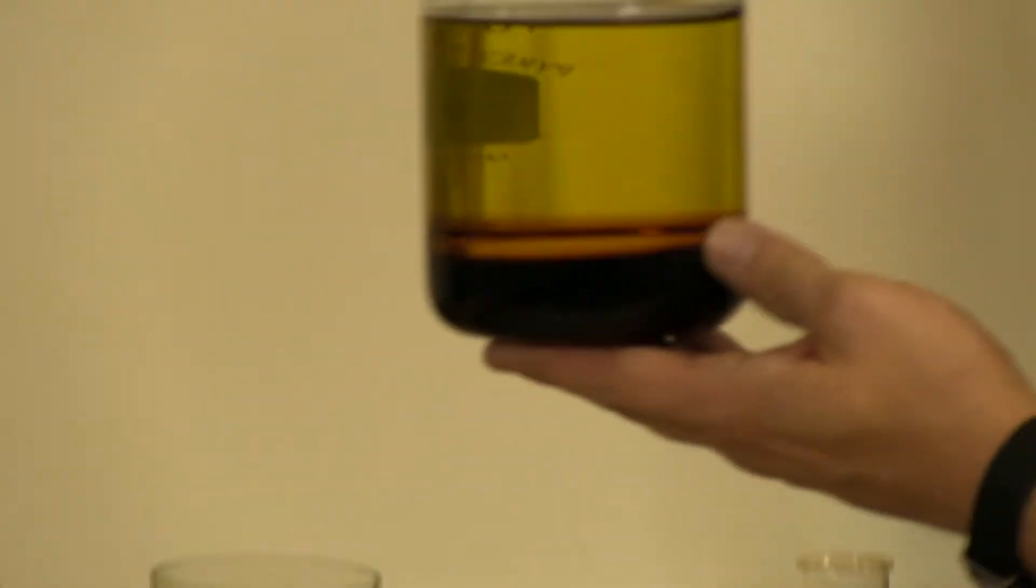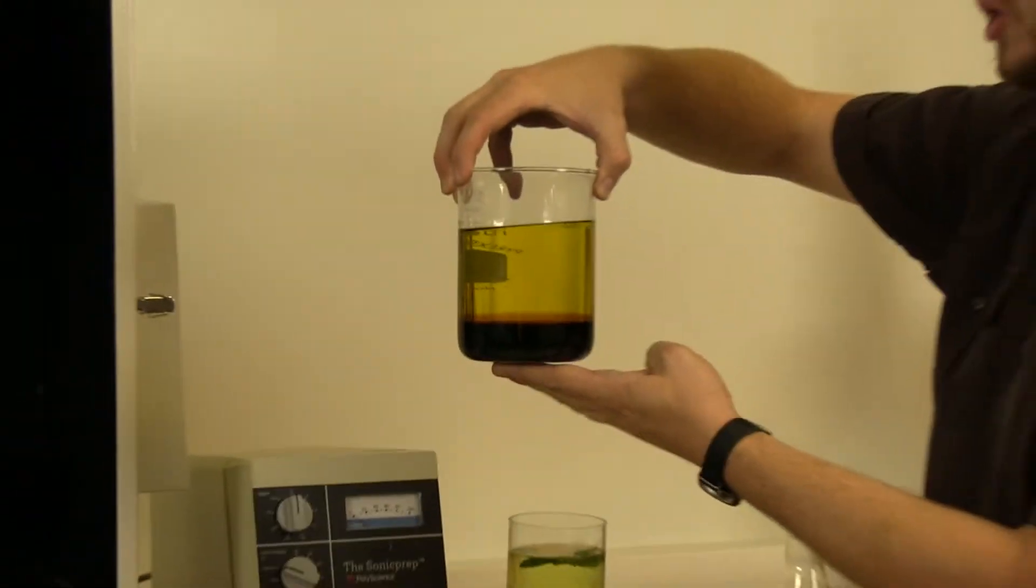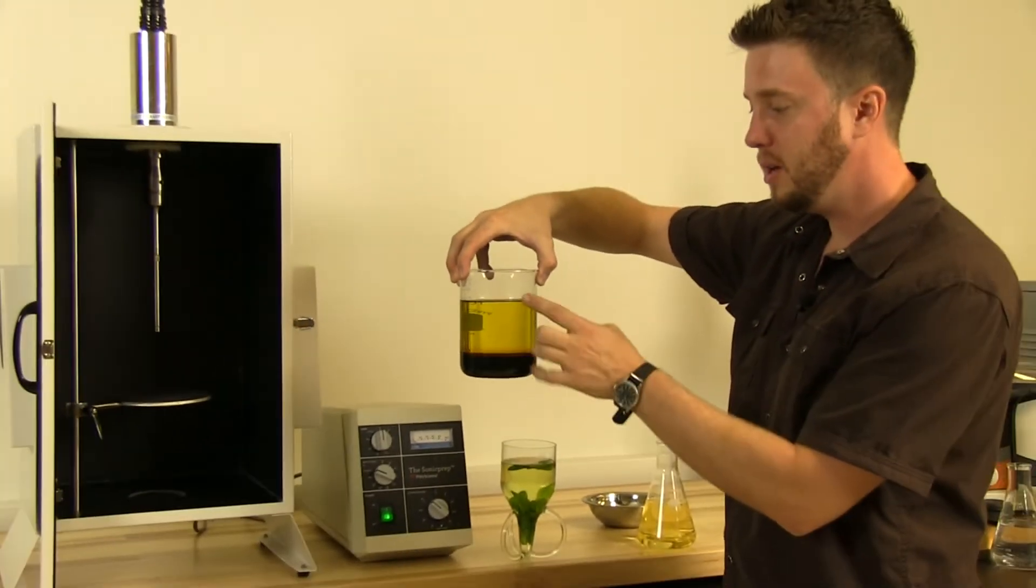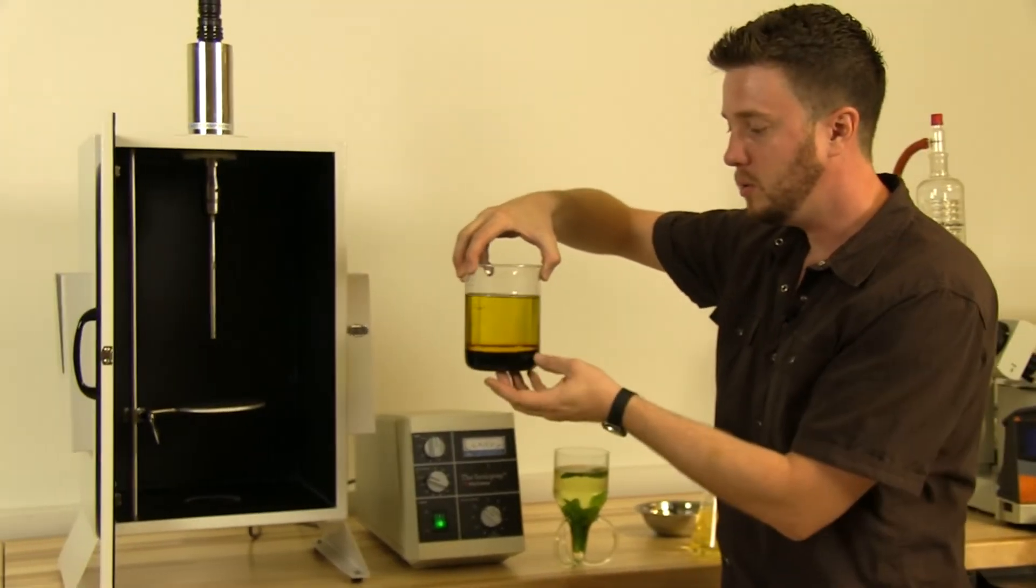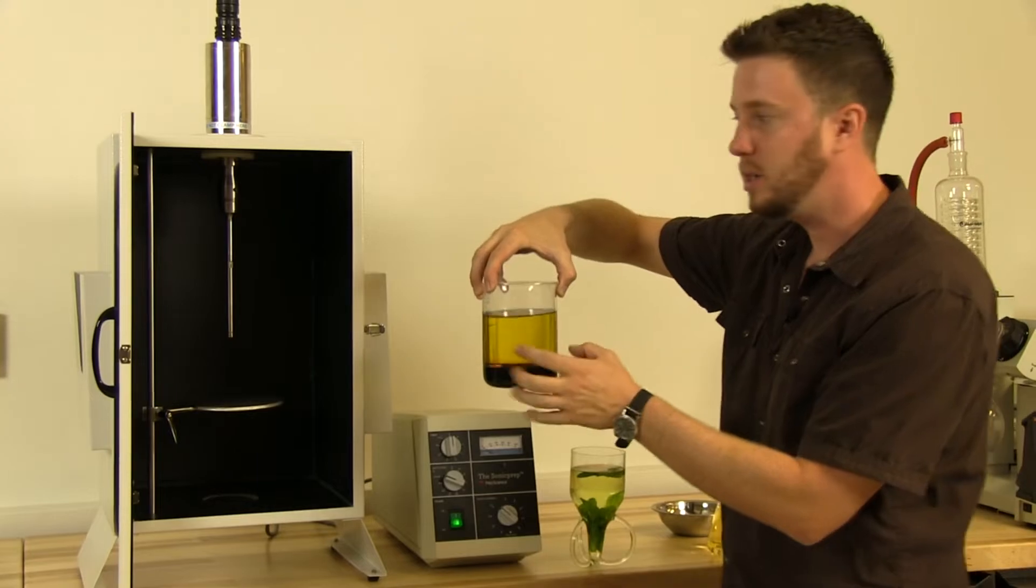So now we're going to do a homogenization, not even an emulsion. This is just balsamic and extra virgin olive oil. So we're going to just homogenize these two.